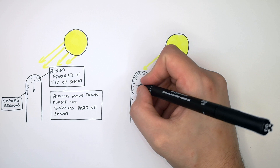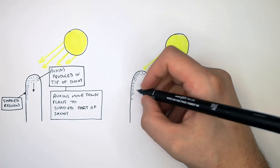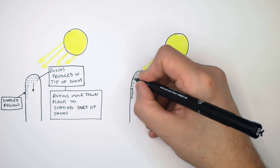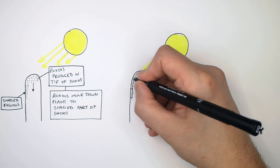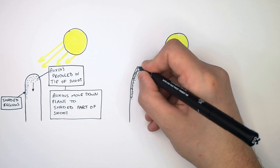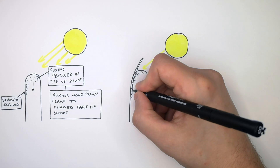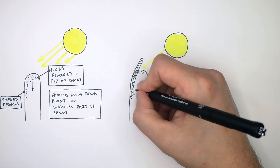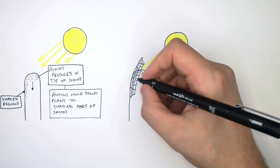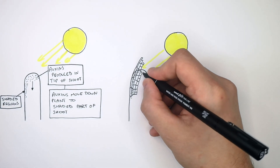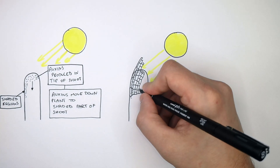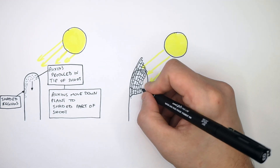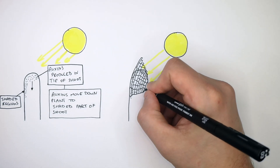The auxins are going to cause the cells in the shaded region to grow quicker — these cells are going to elongate more quickly. So the auxins cause the plant cells to elongate more quickly. The rear side of the shoot, its cells are going to grow more quickly, and where there are no auxins, they're going to grow more slowly. This is going to cause a bending of the shoot towards the light.